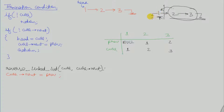I have already written the code. The one in blue is the termination condition, the one in black is the recursive code, and the one in red is the operation for a given node. Let us dry run the code using three nodes.